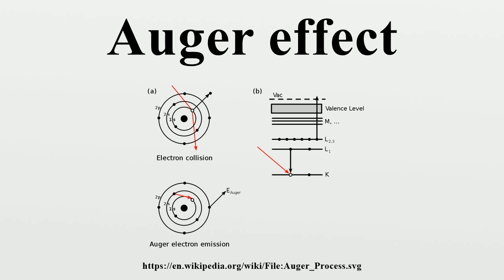Although most of the time this energy is released in the form of an emitted photon, the energy can also be transferred to another electron, which is ejected from the atom.